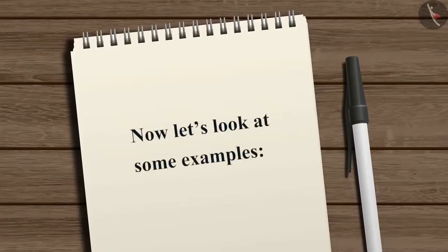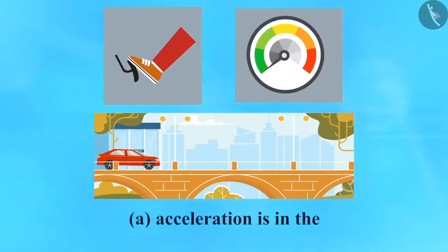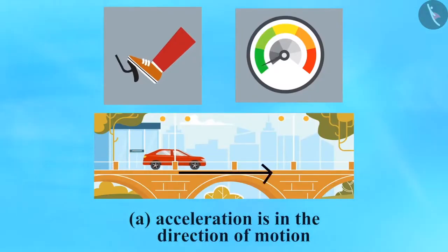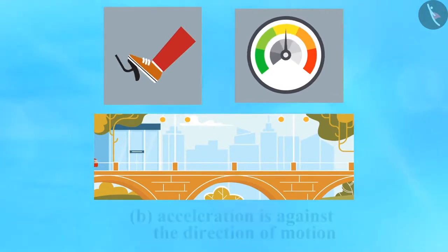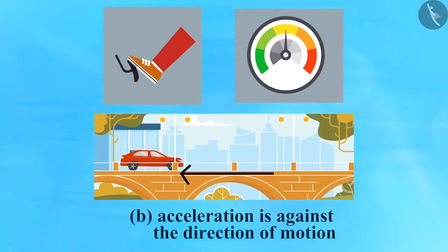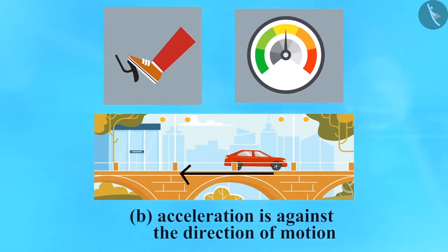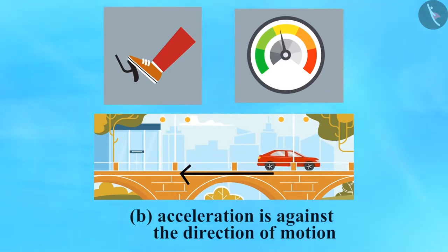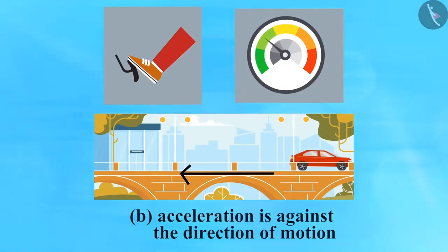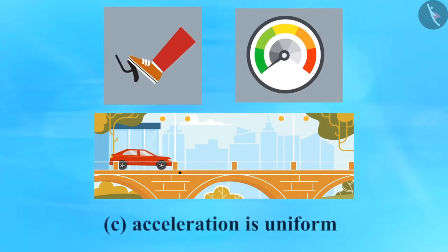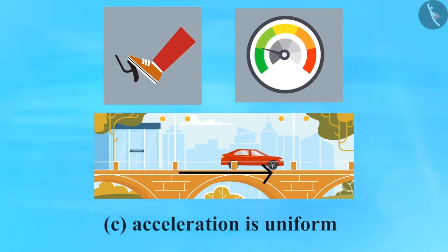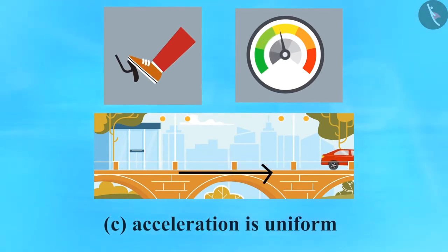Now let's look at some examples. A: Acceleration is in the direction of motion. When the driver pushes the accelerator pedal, the car starts from rest and the speed keeps on increasing — here the acceleration is positive. B: Acceleration is against the direction of motion. The driver applies the brake and the car slows down. Although the car's direction of motion is towards the right, the acceleration is applied in the opposite direction — here the acceleration is negative. C: Acceleration is uniform. When the driver pushes the accelerator pedal and keeps it at a certain position, the speed increases at a uniform rate.